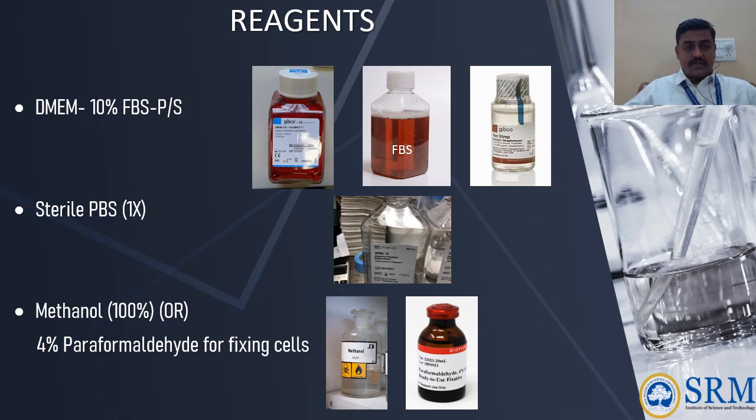The reagents used in this experiment include the selective media made from DMEM and 10% FBS and Penicillin streptomycin at a concentration of 1%. In addition, sterile PBS is used for washing the cells, and for fixing the cells we can use either methanol at 100% or 4% paraformaldehyde.